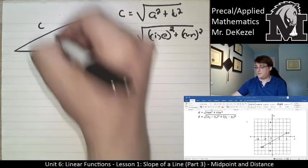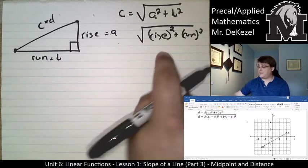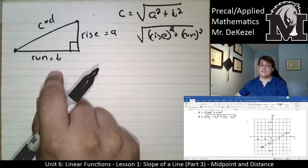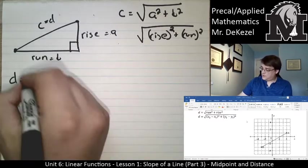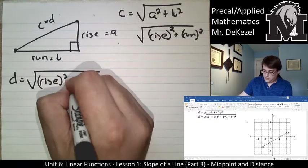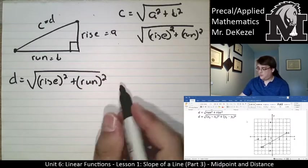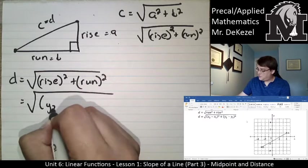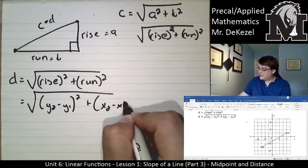So using Pythagorean's theorem, squaring rise and squaring run, adding them together and square rooting them, we can find the distance between any two points. So d is equal to the root of the rise squared plus run squared. So that is the root of (y2 minus y1) squared plus (x2 minus x1) squared.